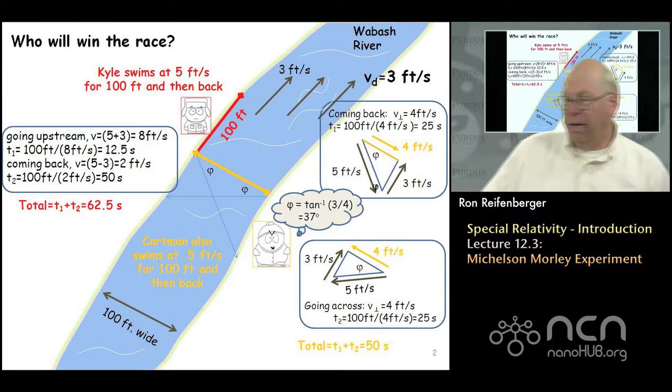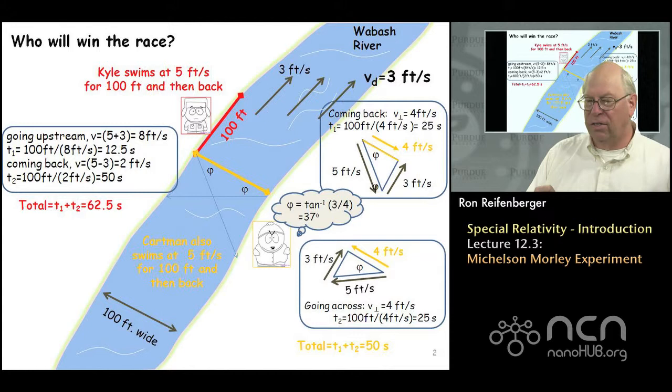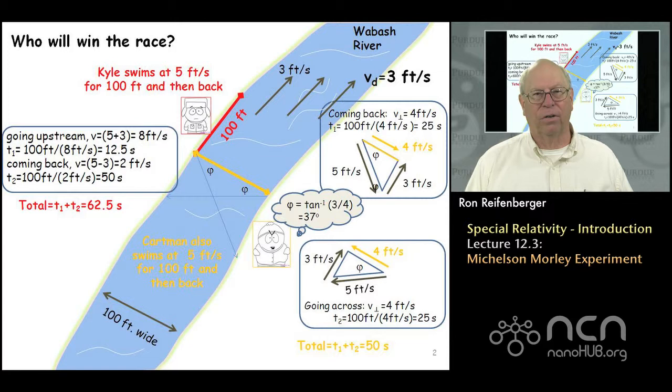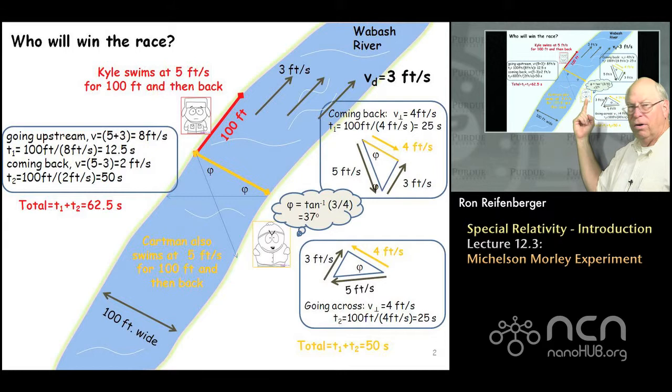I'd like you to think about two swimmers swimming in a river. The river is precisely 100 feet wide and these two swimmers have practiced for months to be able to swim at a constant speed of 5 feet per second. The red swimmer can swim at 5 feet per second, and the orange swimmer can also swim at 5 feet per second.